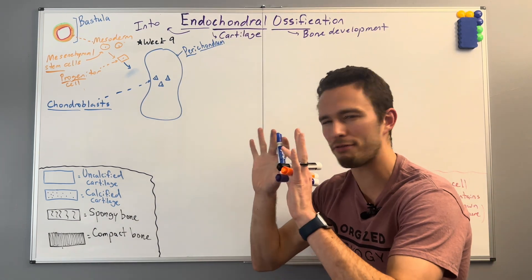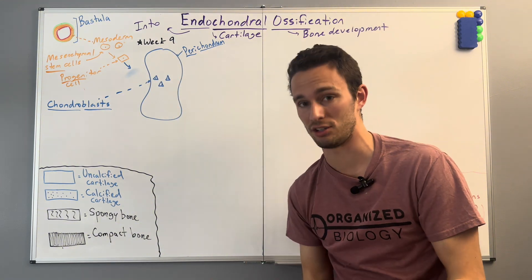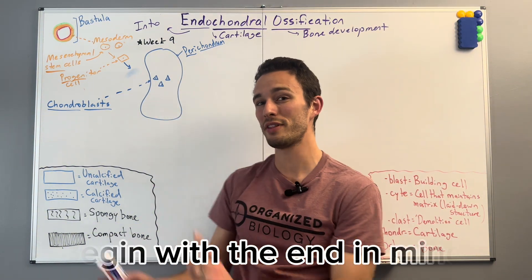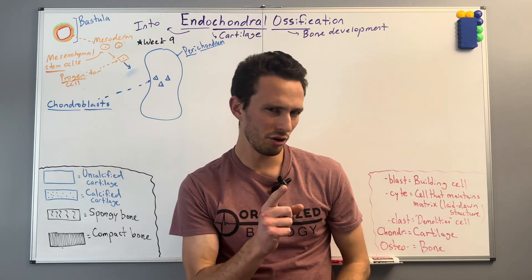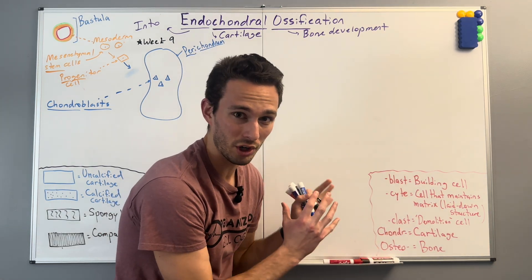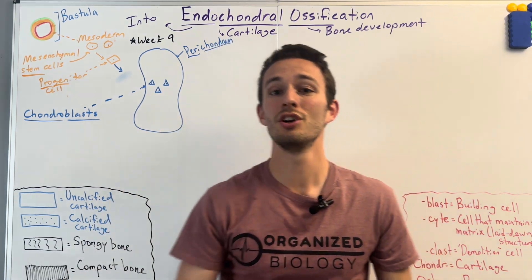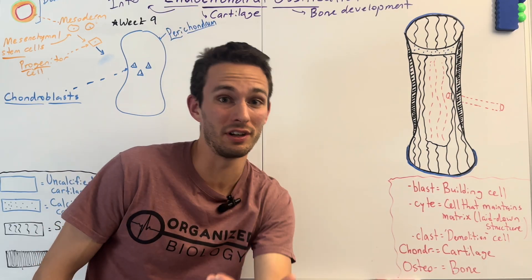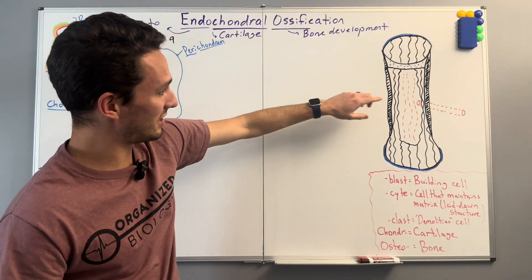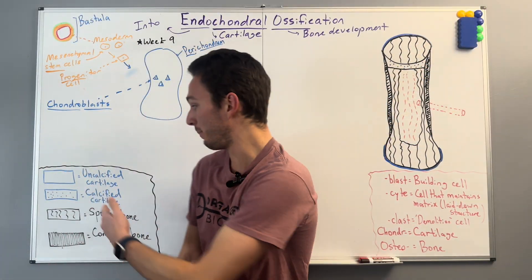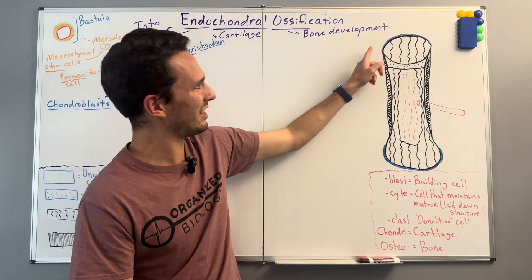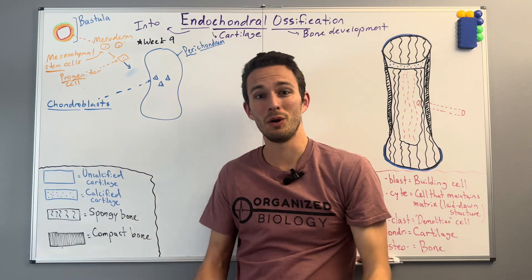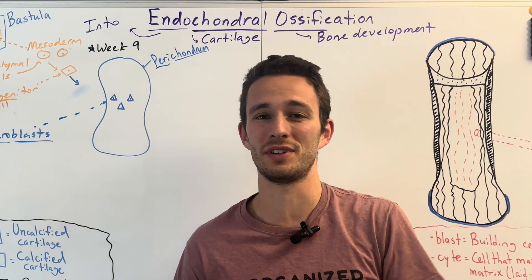We've got basically a framework of what we're going to make the bone into. One of the best things you can do in any class is begin with the end in mind. So I'm going to draw the end product of bone that we're going for, so we can see how we go from this to the end product. This is basically an almost fully developed bone — the majority of the bone is going to be bone tissue itself, but we still have a little bit of cartilage left. So how did all this turn into bone if it started as cartilage? That's where endochondral ossification comes into play.